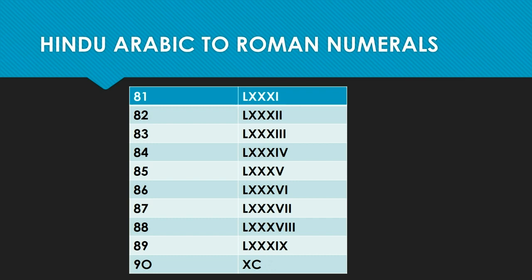Here in this page you can see the Roman numbers for 81 to 90. Eighty-one is 80 plus 1 — 80 is LXXX and 1 is I, so LXXXI. Similarly, 82 is 80 plus 2; write the Roman numerals for 80 and 2 together to get LXXXII. Follow the same rule for all numbers in this range.